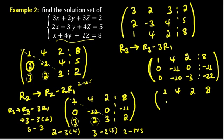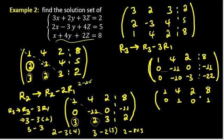0 over minus 11 equals 0. Minus 11 over minus 11 equals 1.